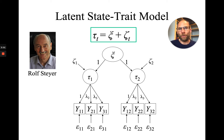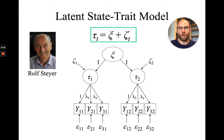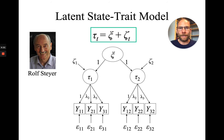The trait captures the person-specific variance — the variance component that is stable across time — whereas zeta 1 and zeta 2 are the residuals that capture situation effects and person-by-situation interactions at a given time point. This model is a second-order factor model, sometimes called a hierarchical factor model. There are also many other ways in which a latent state trait model can be parametrized, and I have other videos that show that as well, including how a latent state trait model can be obtained as a bifactor model.